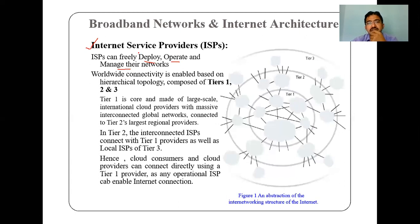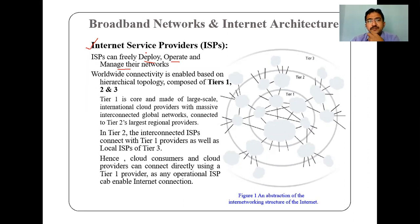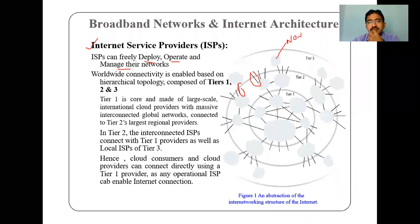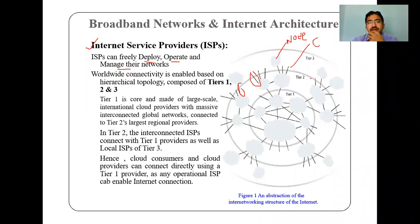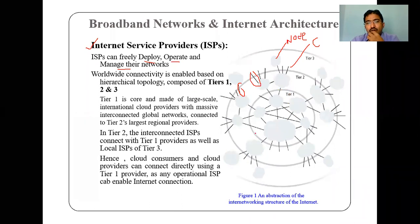If you see on the right-hand side, there is a clear architecture diagram showing tier one, tier two, and tier three. This network looks like nodes connected to each other with connectivity links. In tier one, all the nodes are fully connected to each other. If you remember from computer networks, we have different topologies — bus topology, tree topology — and here the components are called nodes. Tier one is fully connected — all nodes are connected to each other.